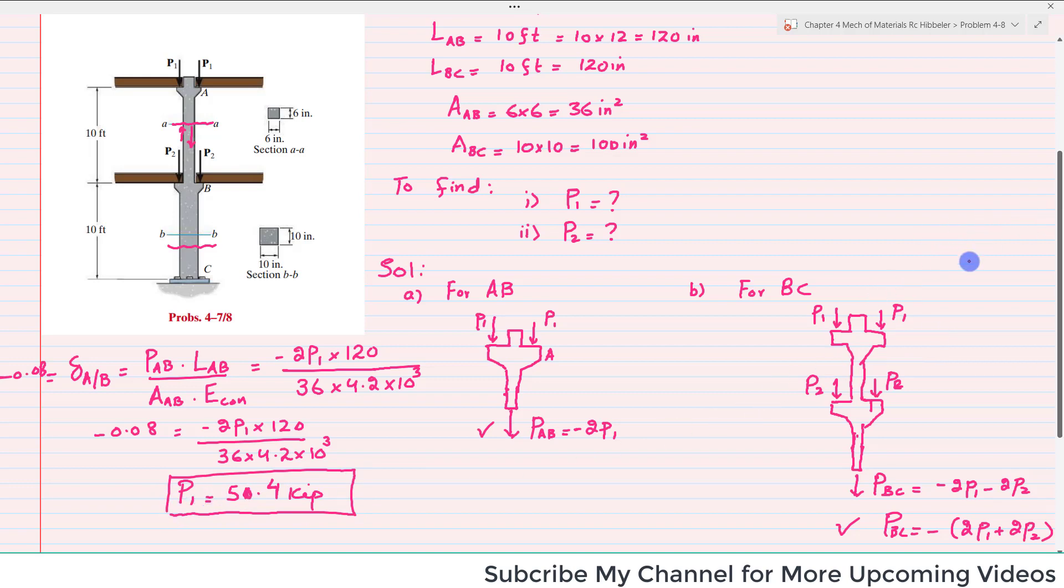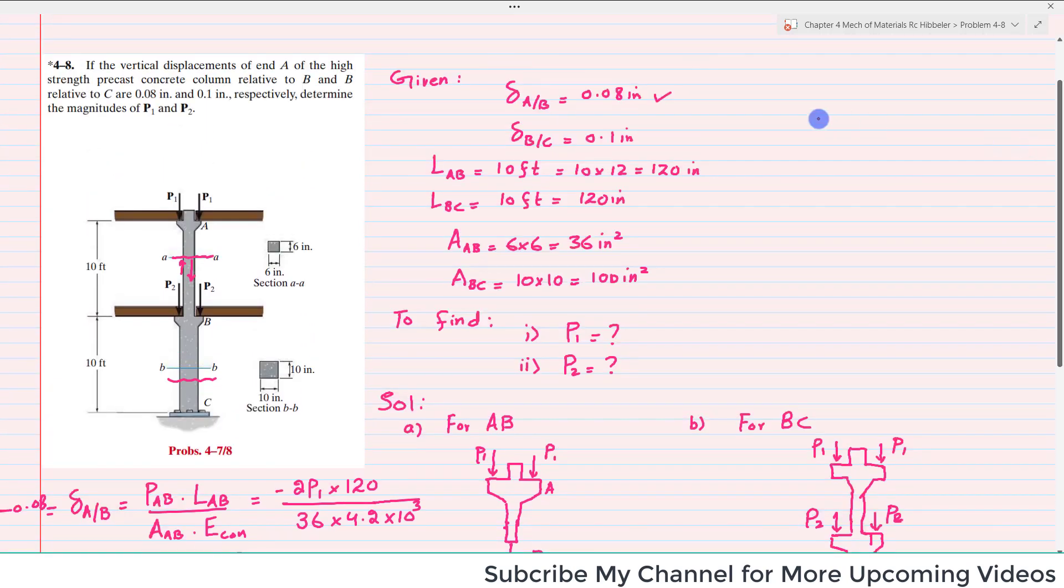Now we will find P2. Again, it is also given that delta of B with respect to C is given as 0.1. And this 0.1 is equal to delta of B with respect to C, equal to PBC into LBC divided by area of BC into E of concrete. You have all the values, you can put it. This value will be also minus because B moves towards C, so it will be negative.